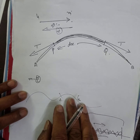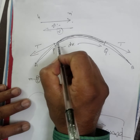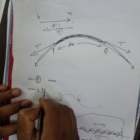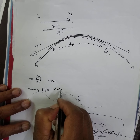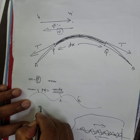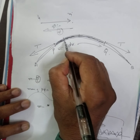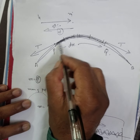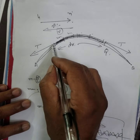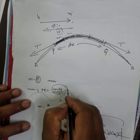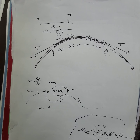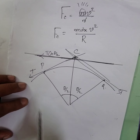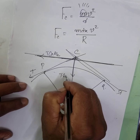Now consider a small segment PQ of the wave, having length dx. If M is the mass per unit length (linear density) and T is the tension acting on both sides of the segment, then the mass of this portion PQ is equal to M·dx.